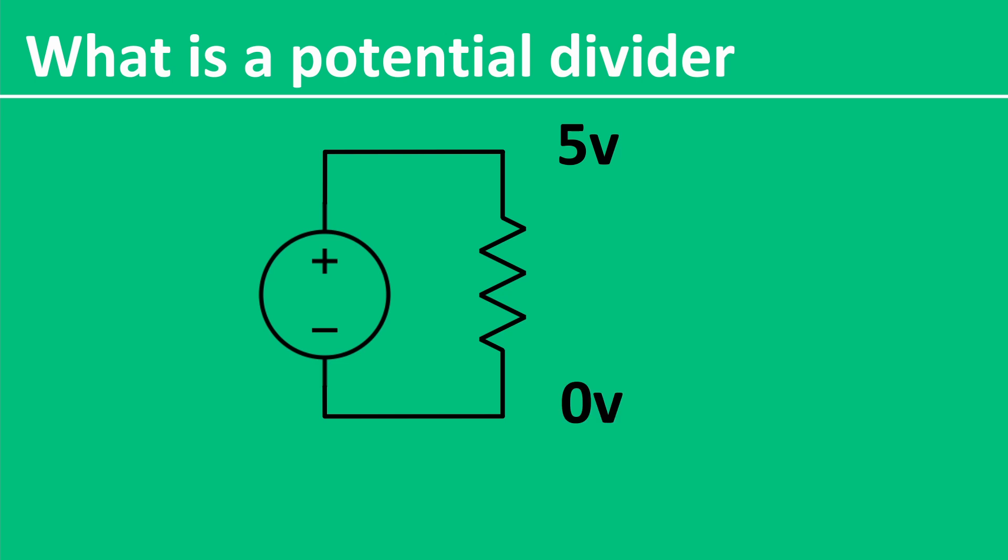We can say that there is a 5 volt drop over this resistor, because one end is at 5 volts and the other end is at 0 volts. Now, if we connect a second resistor of the same value in series with the first resistor, they will still have the same total voltage drop of 5 volts, as there is still a 5 volt source and ground on the other end.